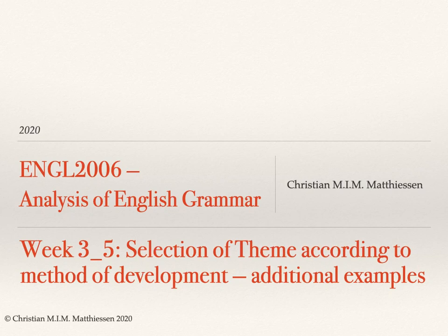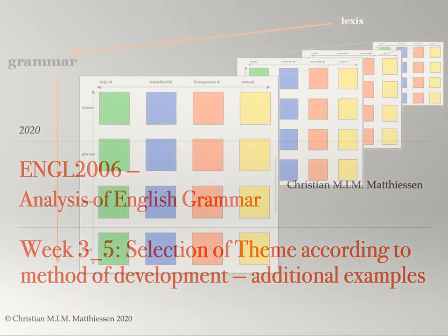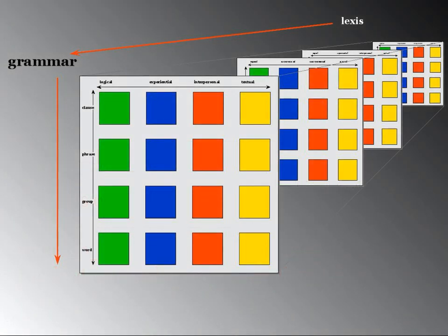Welcome to the final segment of Lecture 3, Segment 5. In this segment we will be concerned with selection of theme according to the method of development of a text, its method of progression. We've already seen a few examples in Segment 4, and in this segment I'll add a few more examples from other text types or genres. We're still in the north-western corner of the grammar of English — the textual resources of the grammar of the clause.